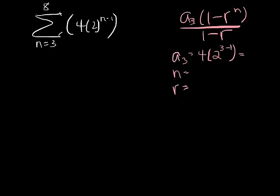n is the total number of terms, right? So how many terms are there from the third term to the eighth term? So a sub 3, a sub 4, a sub 5, 6, 7, 8. That's six terms. And my r value is 2.